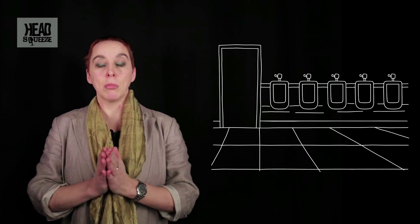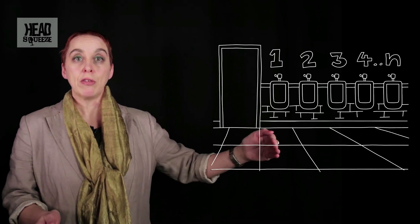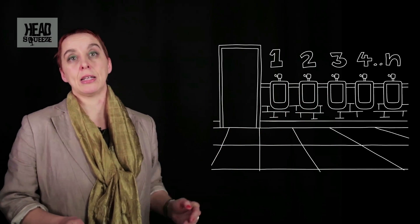We can build a mathematical model of a urinal that starts here with position one near the door, two, three, four, to N at the far end.